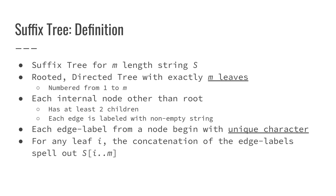Something that allows us to solve this problem is a data structure called a suffix tree. We can build a suffix tree for an M-length string S. It is a rooted directed tree with exactly M leaves, each numbered from 1 to M, so each leaf has a unique number. Each internal node — that is, a node that is not the root or a leaf — has at least two children; it's a point where the path splits.